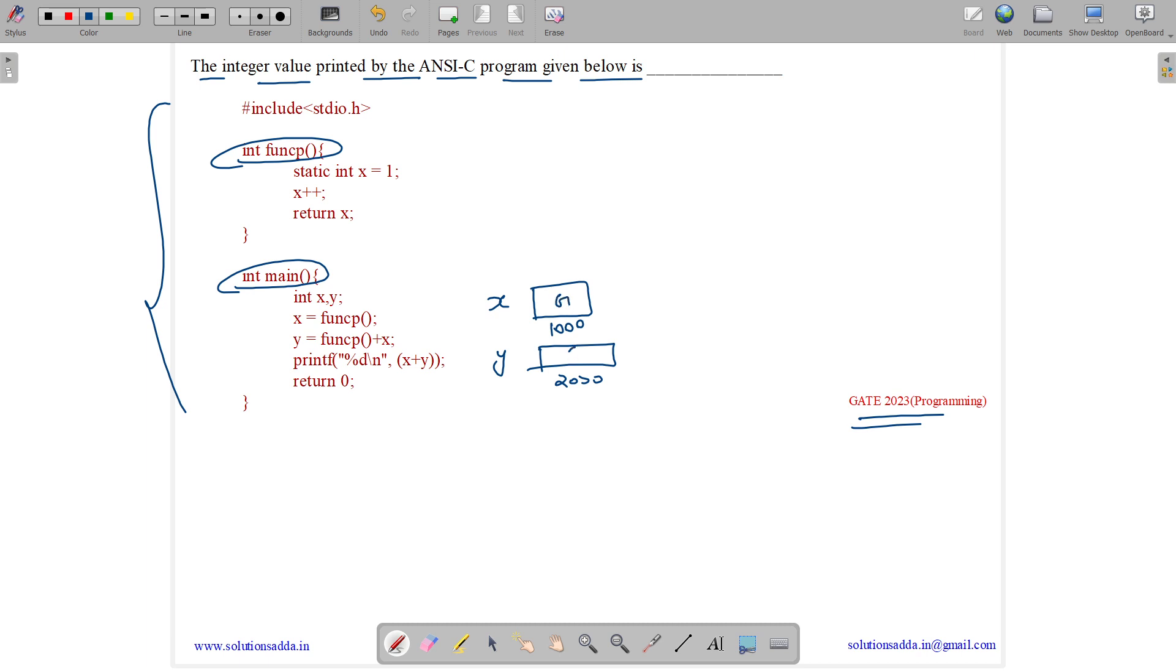It has garbage value initially as these are local variables. And during the compile time, due to the static int, a static variable x is created with the address 3000 and a default value 0.